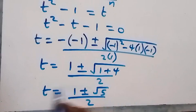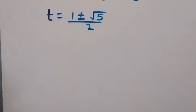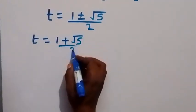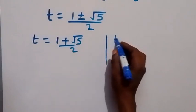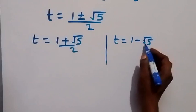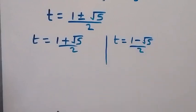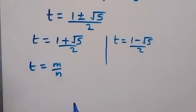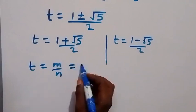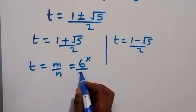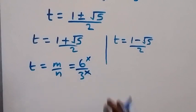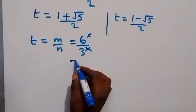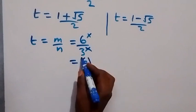We have two values of t: the first is t equals (1 plus root 5) over 2, and the second is t equals (1 minus root 5) over 2. Recall that t represents m over n, where m = 6 raised to power x and n = 3 raised to power x, which can be written as (6/3) raised to power x.